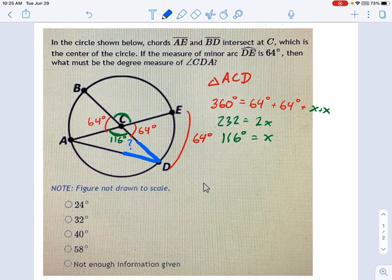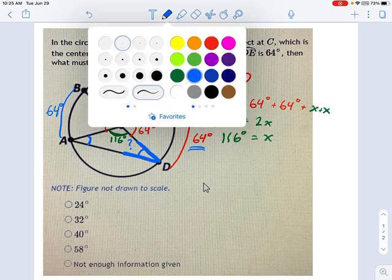This angle right here is equal to this angle right here. The reason that's true is because this 64 degrees over here is the same as this arc over here, that is also 64 degrees. Because of the symmetries of the arcs of the circle, that means the angles in this triangle are also symmetric.